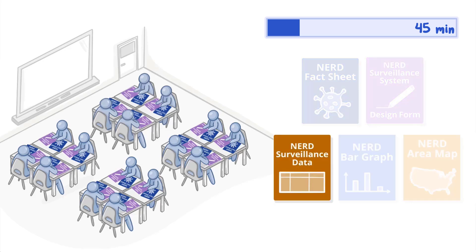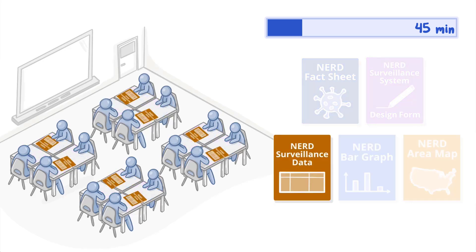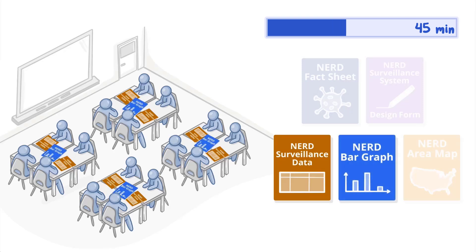For the part two activity, provide each group of students with the NERD surveillance data sheet that corresponds to one month. Handing out two copies per group will allow students to share the data more easily. Also, hand out to each group one NERD bar graph for graphing age distribution information and the NERD area map to visualize incidence rate of disease by state.